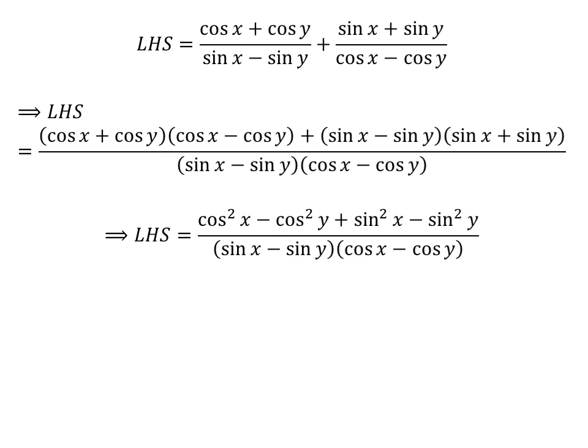As (a + b)(a − b) equals a² minus b², the left hand side becomes: square of cosine of x minus square of cosine of y, plus square of sine of x minus square of sine of y, upon sine of x minus sine of y times cosine of x minus cosine of y.